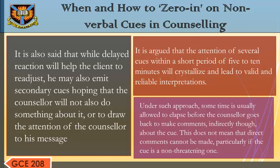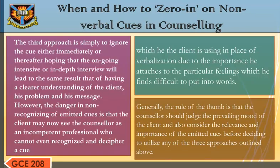This does not mean that a direct comment cannot be made, particularly if the cue is a non-threatening one. The third approach is simply to ignore the cue, either immediately or thereafter, hoping that the ongoing in-depth interview will lead to a clear understanding of the client, his problem, and his message. However, the danger in non-recognition of emitted cues is that the client may see the counselor as an incompetent professional who cannot recognize a cue the client is using in place of verbalization. Generally, the rule is that the counselor should judge the prevailing mood of the client and consider the relevance and importance of the emitted cues before deciding which of the three approaches to utilize.